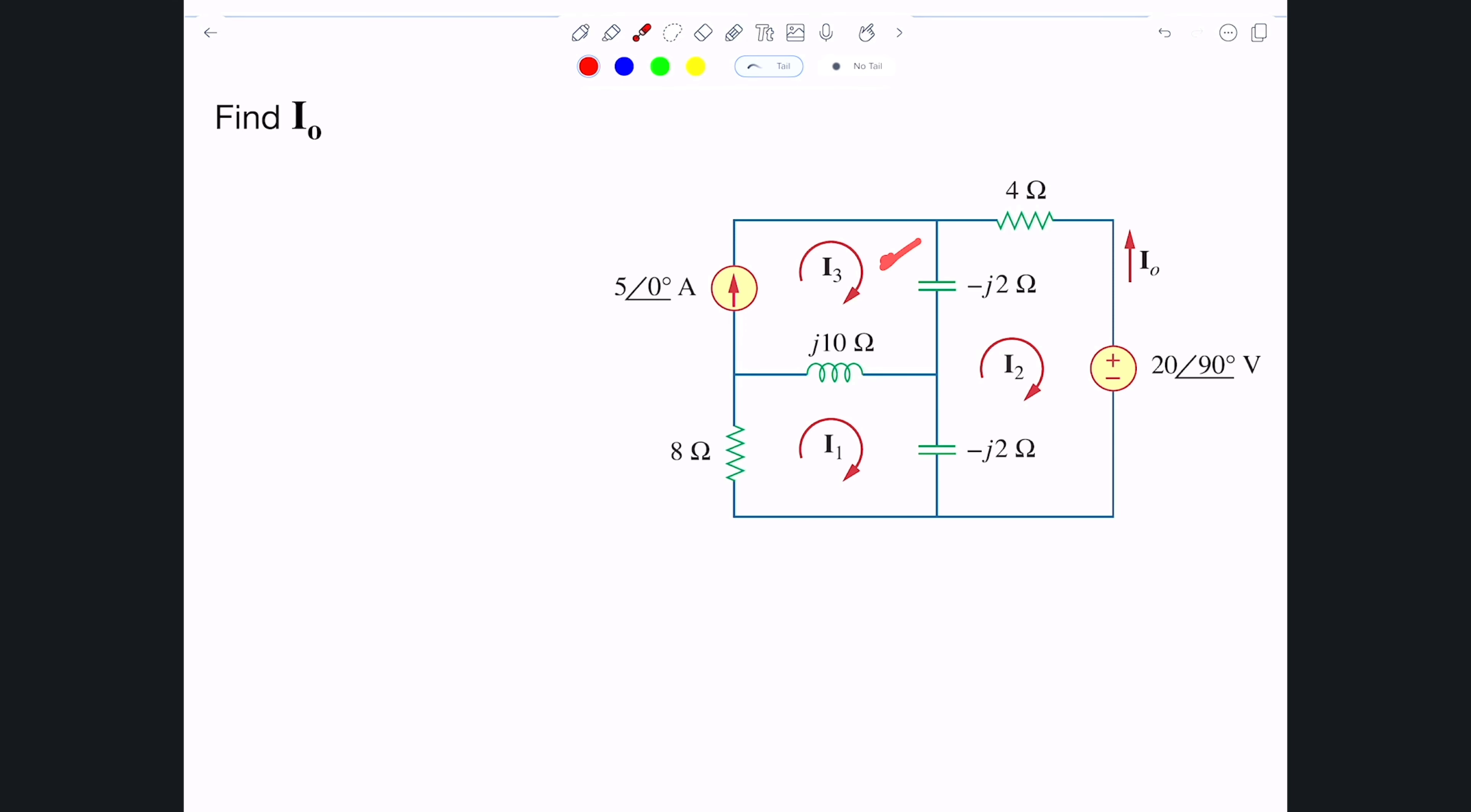We want to find I0. There are multiple circuit analysis techniques that we can use, but probably you have figured out since I've given you these mesh currents in here we should be using mesh equations. Using mesh here we know that I3 will be exactly the same as this current source, so that leaves us with I1 and I2, so two unknowns, two equations to solve this particular circuit.